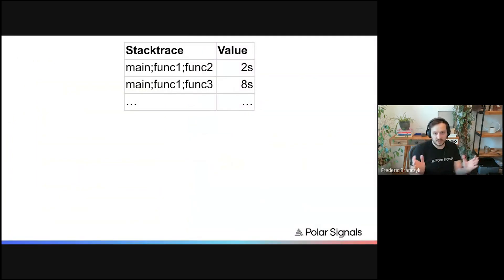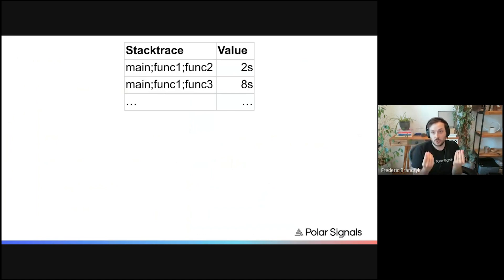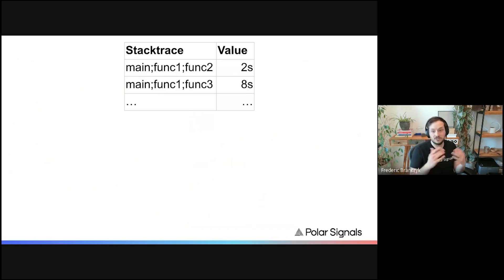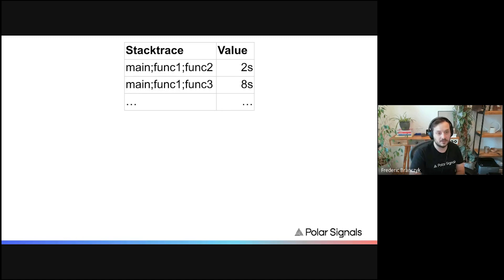Putting this into a table, roughly what we have are stack traces and values. I've shown CPU profiling data here, but this could be anything — any resource we can measure and associate to a stack trace. It can be memory allocations, or the amount of memory held by functions that was originally allocated by some stack. Anything we can think of.